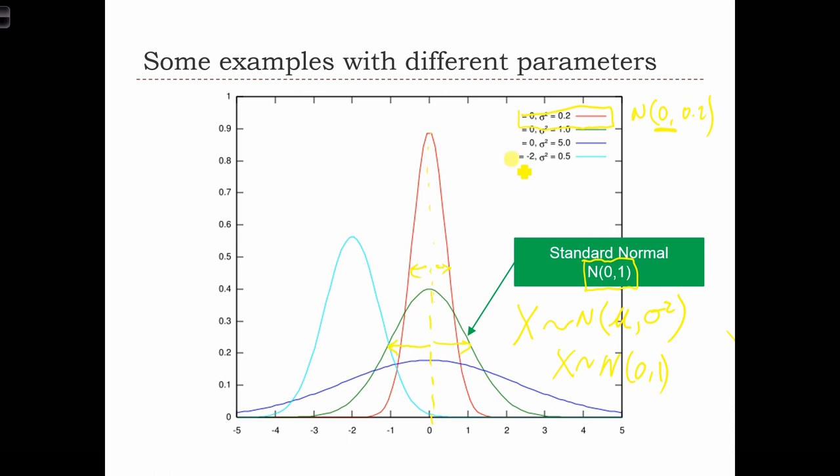In the case of this distribution, which is normal minus 2, 0.5, we see that it's slightly more narrow than the standard normal, but it's centered on x equals minus 2. The mu here is minus 2.